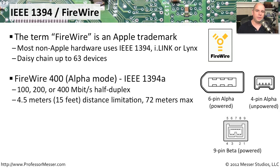There are two different types of FireWire that you will commonly see. The first is FireWire 400, and it runs at 100, 200, or 400 megabits in half duplex. The distance limitation you generally see with FireWire 400 is about 4.5 meters, about 15 feet long.